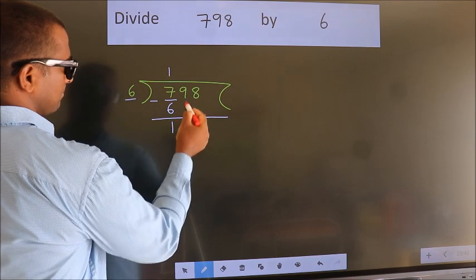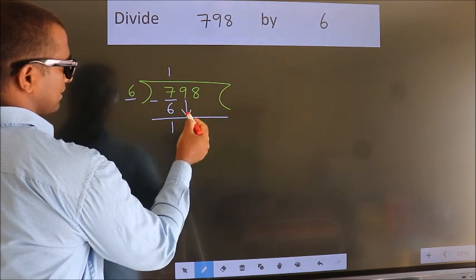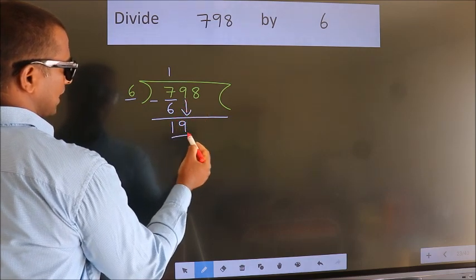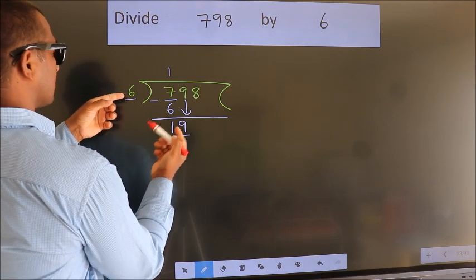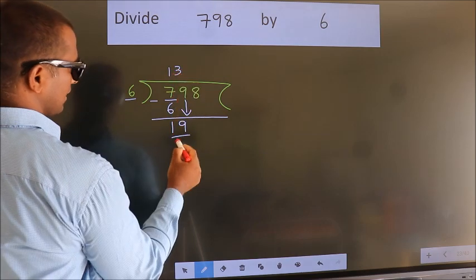After this, bring down the beside number. So 9 down. So 19. A number close to 19 in 6 table is 6 threes, 18.